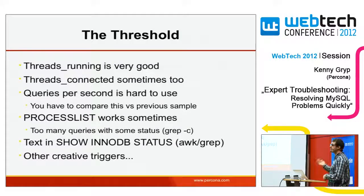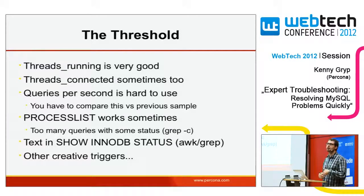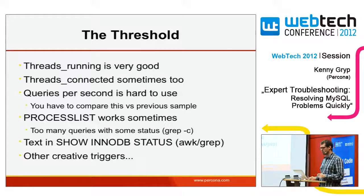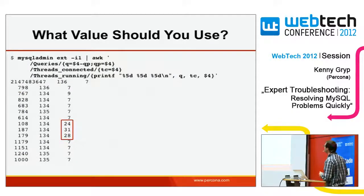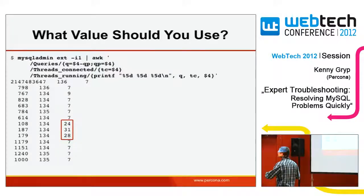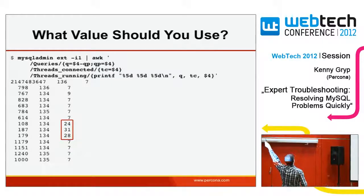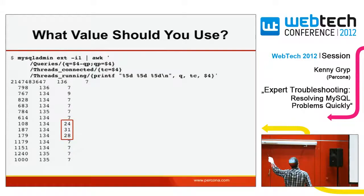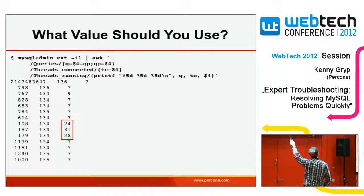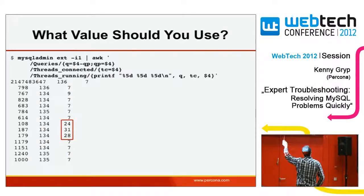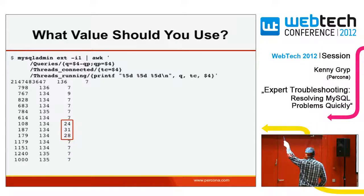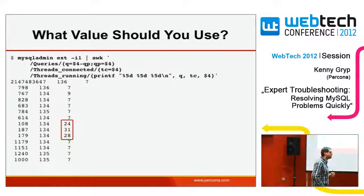For example, threads_running normally stays at 1, so we set the threshold to 15. As soon as it goes higher, we start collecting everything we've configured. Don't set the threshold too low or too high — find a balance. You can use threads_connected, SHOW PROCESSLIST, SHOW INNODB STATUS, or any custom script you write. When the script returns a non-zero exit code, collecting starts. Looking at the graphs: queries per second drops and threads_running spikes at the same time, so monitoring threads_running closely lets us trigger data collection.